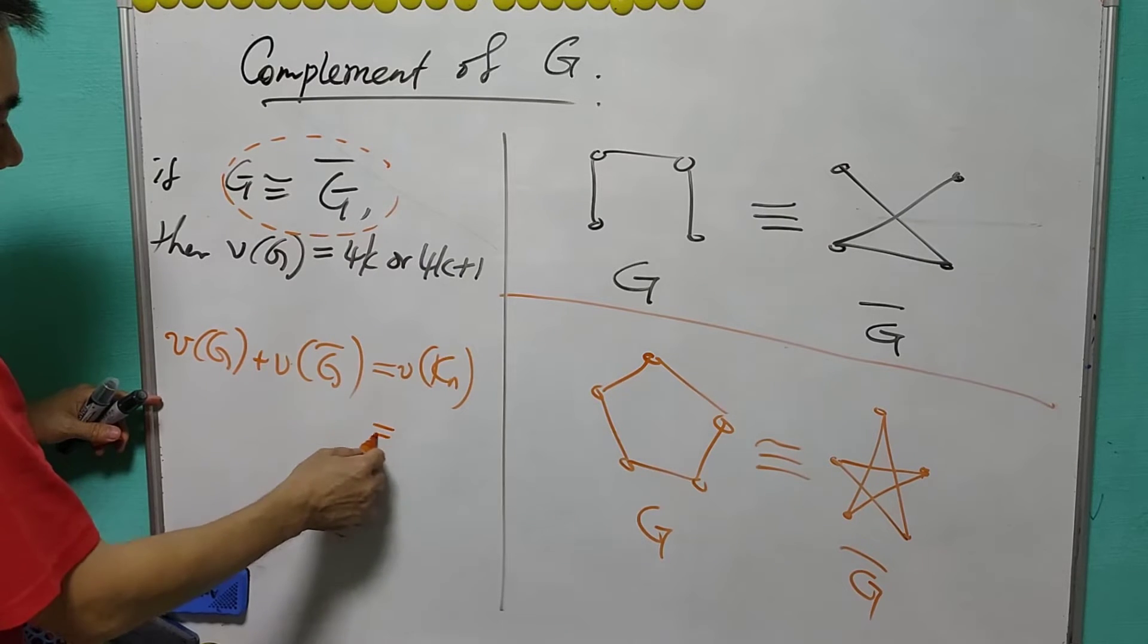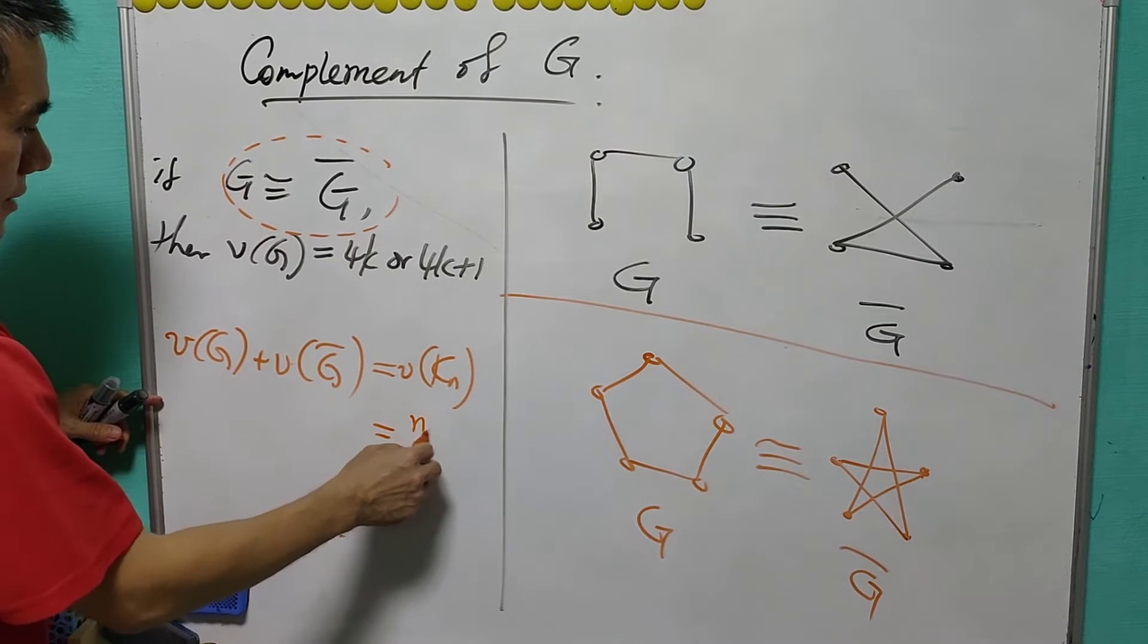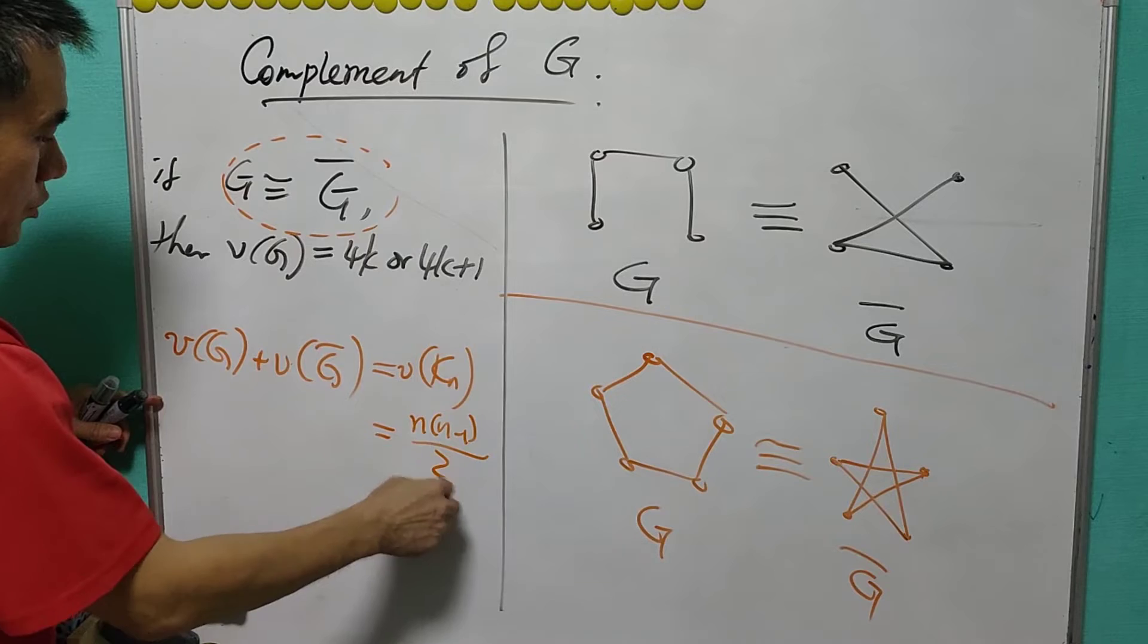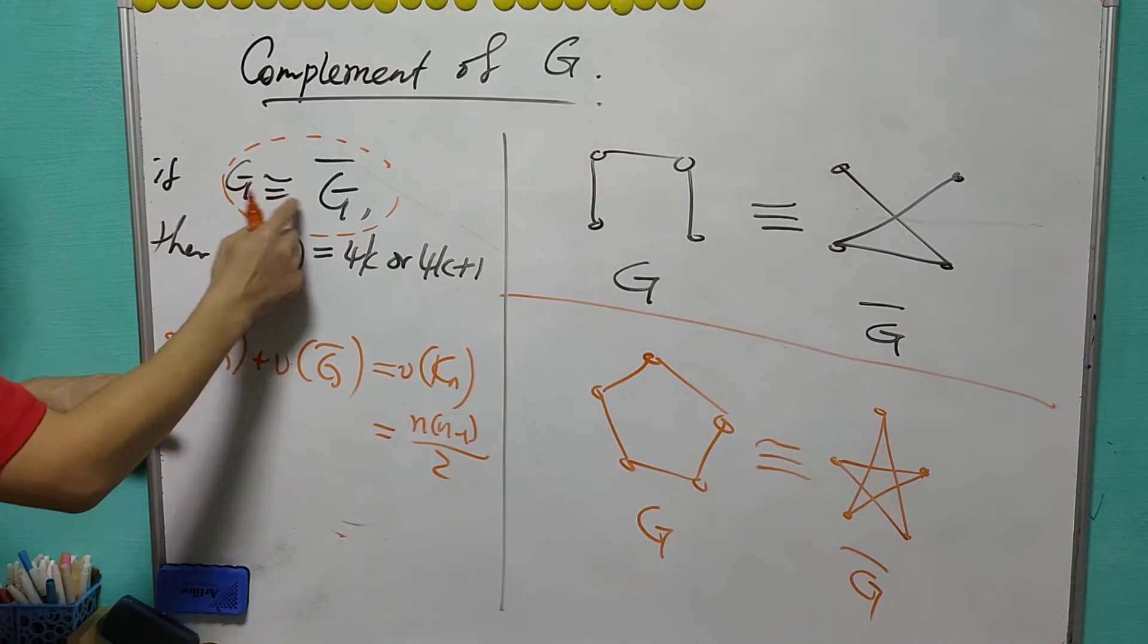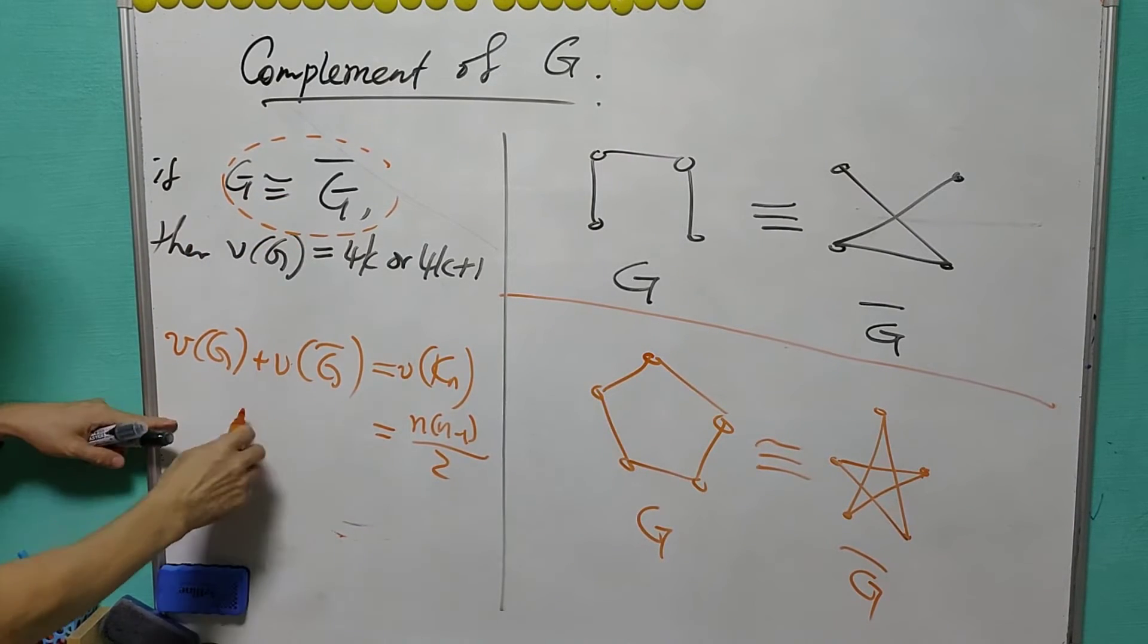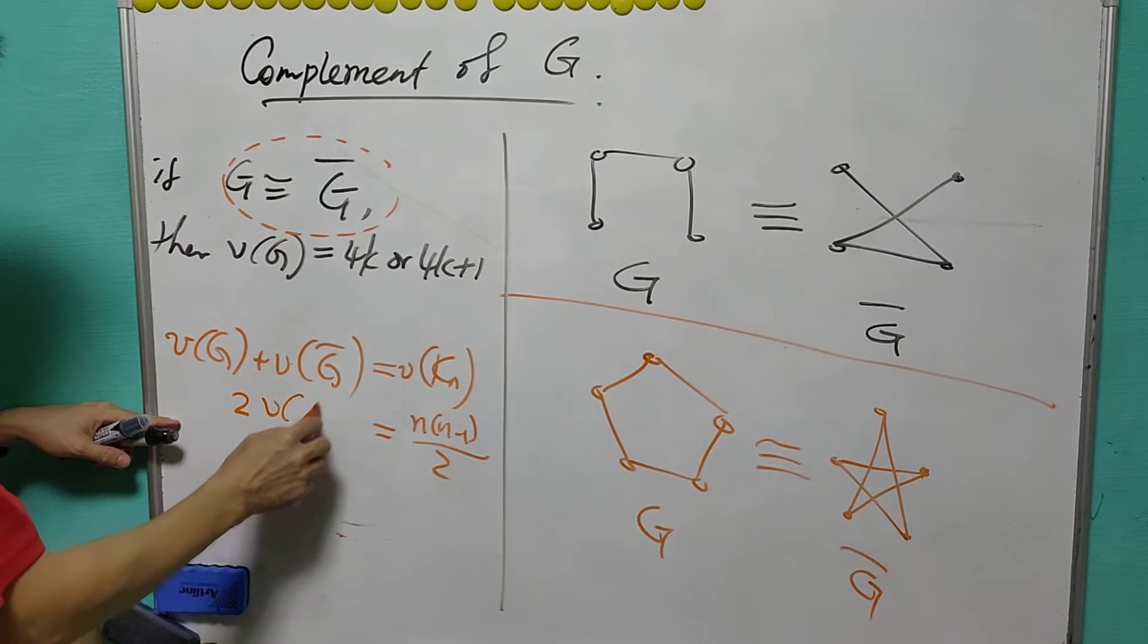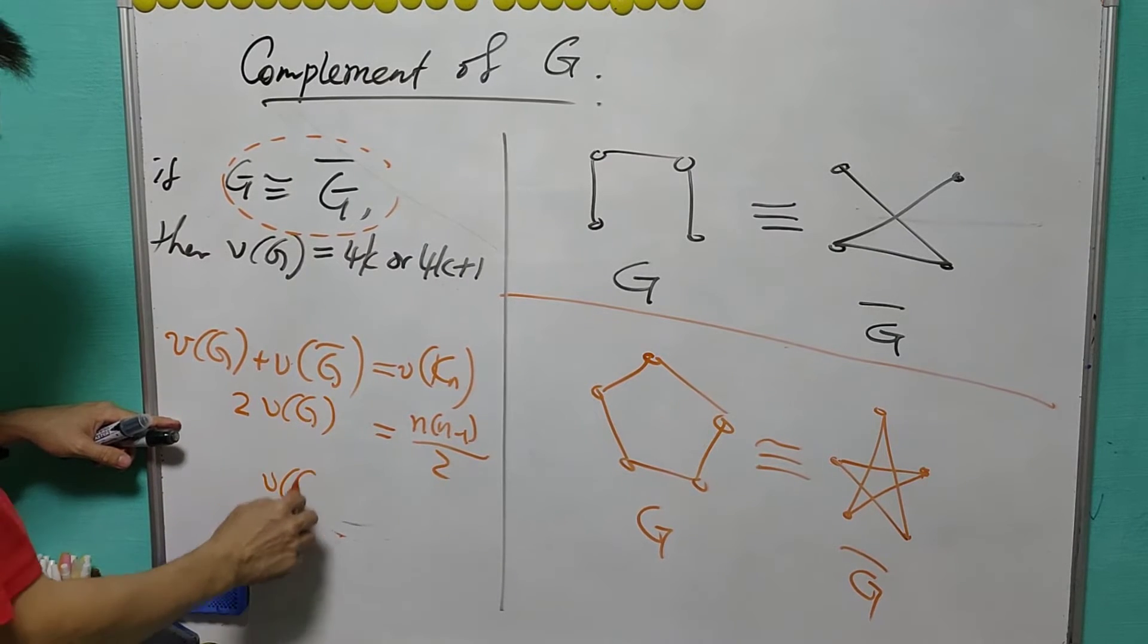In this case, this is N times N minus 1 over 2. Since G is self-complementary, these two are the same, and therefore this is double the size of G. So the size of G will equal to N times N minus 1 over 4.